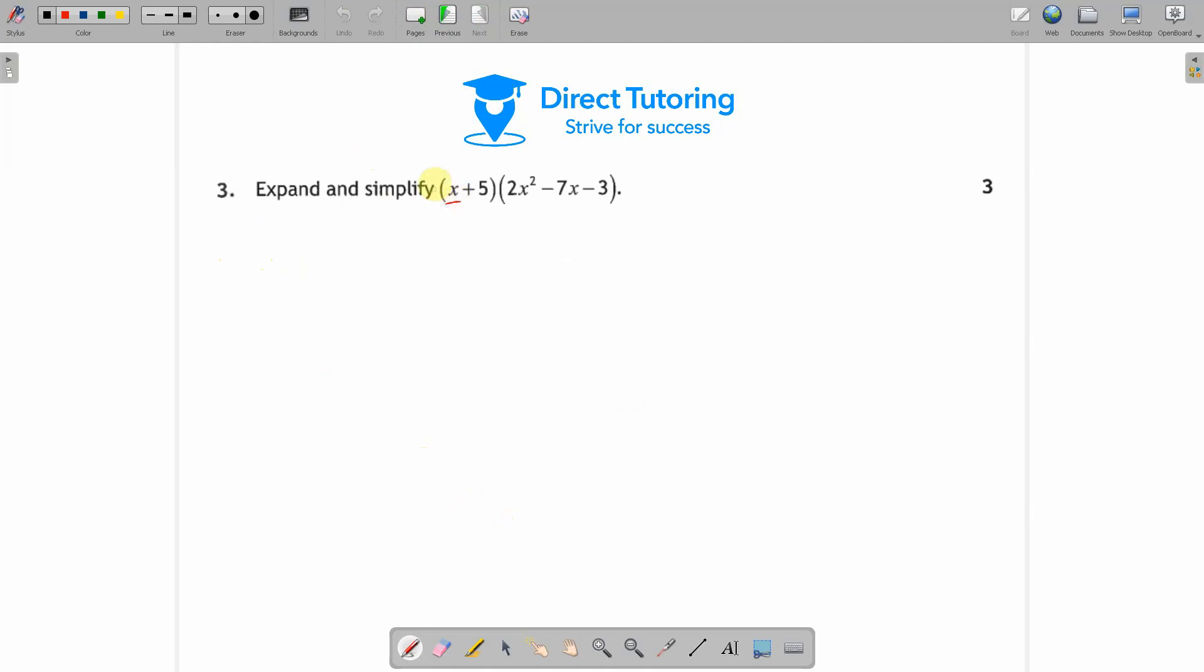Question number 3 is taking a bracket with 2 terms and multiplying it by a bracket with 3 terms. So all we have to do is consider each term individually in the bracket with 2 terms.